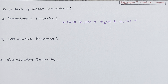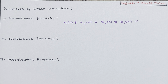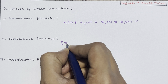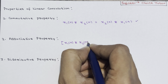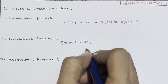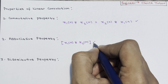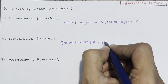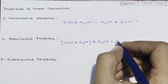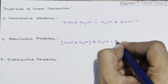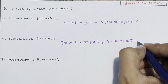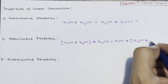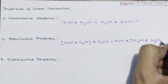The associative property states that the result of convolving x1(n) and x2(n), when further convolved with x3(n), is equal to convolving x1(n) with the result of convolving x2(n) and x3(n). In other words, [x1(n) * x2(n)] * x3(n) = x1(n) * [x2(n) * x3(n)].